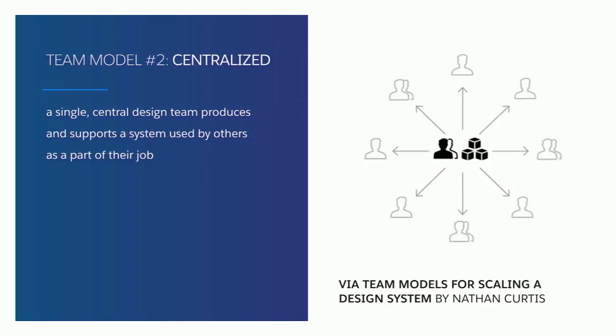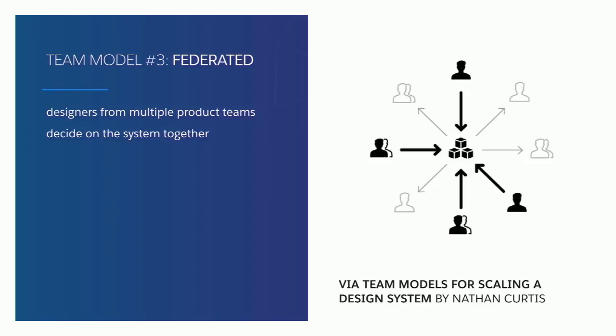The second model is a 'centralized' team — more in service of the organization. They full-time work on, maintain, and craft the design system together, and it's all in service of the organization. The third model is 'federated,' where you get people from multiple teams — say, a company with multiple products — and you appoint one or two people across all these different teams, and they all work together and decide on the design system.